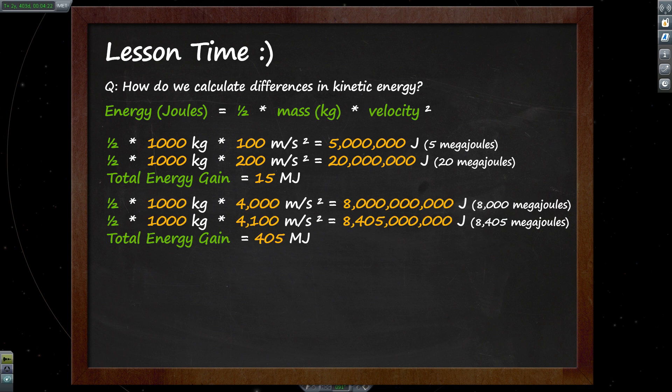Now let's take a more extreme example — adding the same 100 metres per second, but while travelling at a much higher velocity. When we were at our burn point at EVE's periapsis of around 100 kilometres from the surface, we were moving at around 4,400 metres per second. For simplicity, let's round that down to 4,000 metres per second. Plugging in our numbers, we have a starting kinetic energy of around 8,000 megajoules. Our end velocity of 4,100 metres per second gives us 8,405 megajoules. So our gain here was 405 megajoules — even though we spent the exact same fuel and gained the exact same amount of delta V.